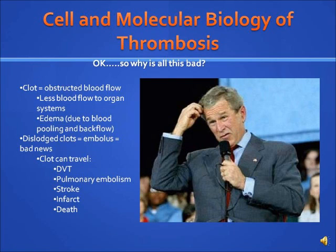Thrombosis can result in many serious health complications. A clot obstructs blood flow, so less blood reaches certain organ systems, and edema can result due to blood pooling and backflow. Dislodged clots, or emboli, can result in even more serious complications. A clot can travel — as seen in deep vein thrombosis — through the lower leg, through the lungs causing pulmonary embolisms, to the brain causing strokes, and can cause infarctions or tissue necrosis due to lack of oxygen, and even death.